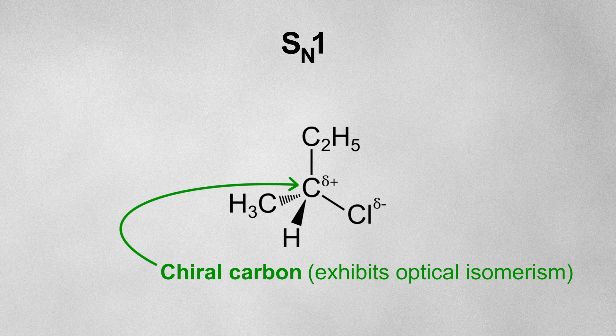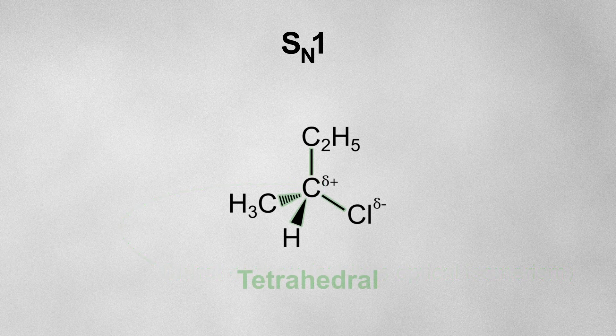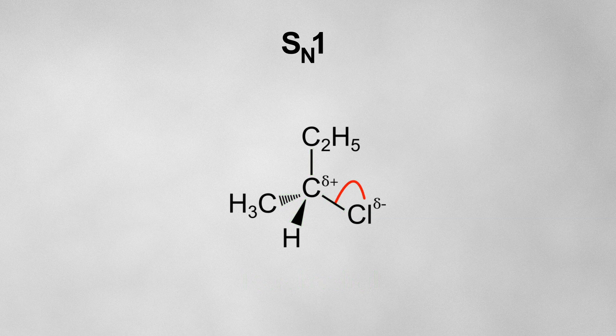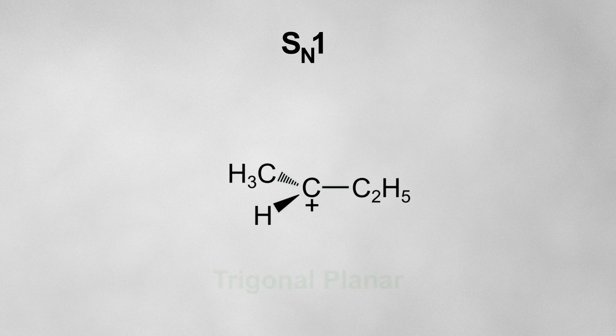For an SN1 reaction, let's start with an optically active halogeno alkane, or in other words, a halogeno alkane that exhibits optical isomerism. The delta plus carbon originally has a tetrahedral configuration. After the halogen leaves, the carbocation intermediate will have a trigonal planar configuration.